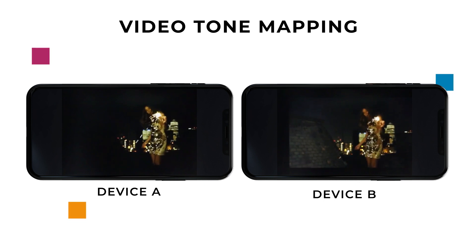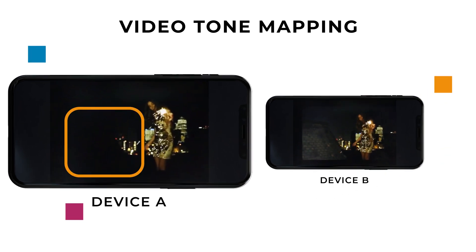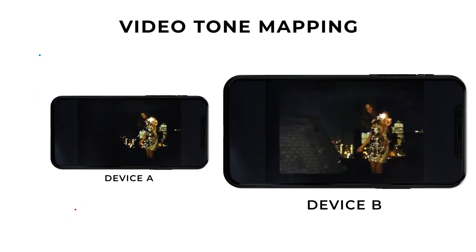Notice how device A shows a lack of detail in the dark tones of the HDR video, whereas device B provides more details in these areas.